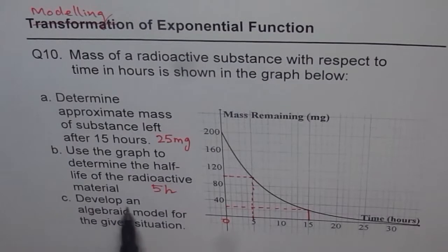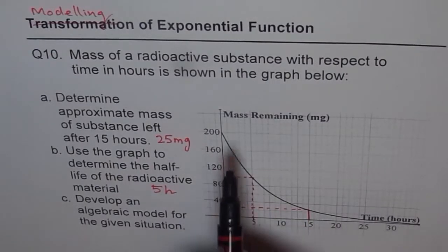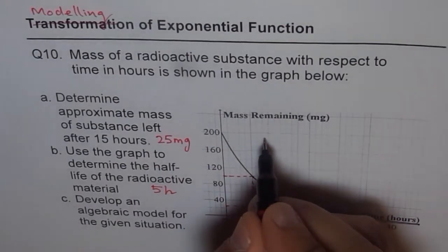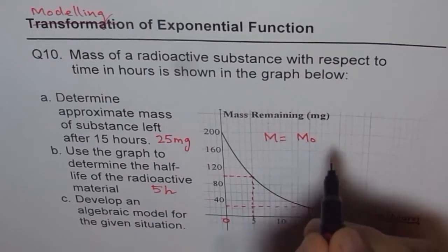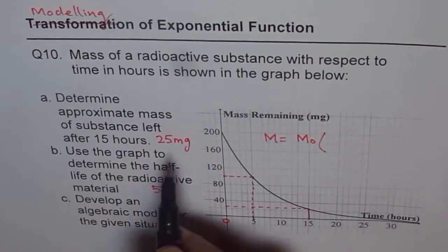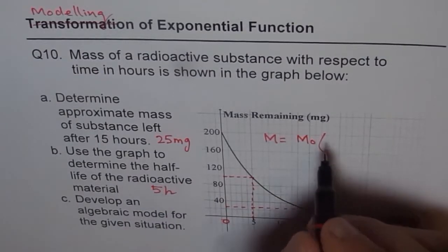Now we need to develop an algebraic model for the given situation. The algebraic model will help us to provide the remaining mass. So the remaining mass M should be equal to initial mass M0 times the decay rate, this is decaying. And since we know the half-life, it's good to write in terms of half-life.